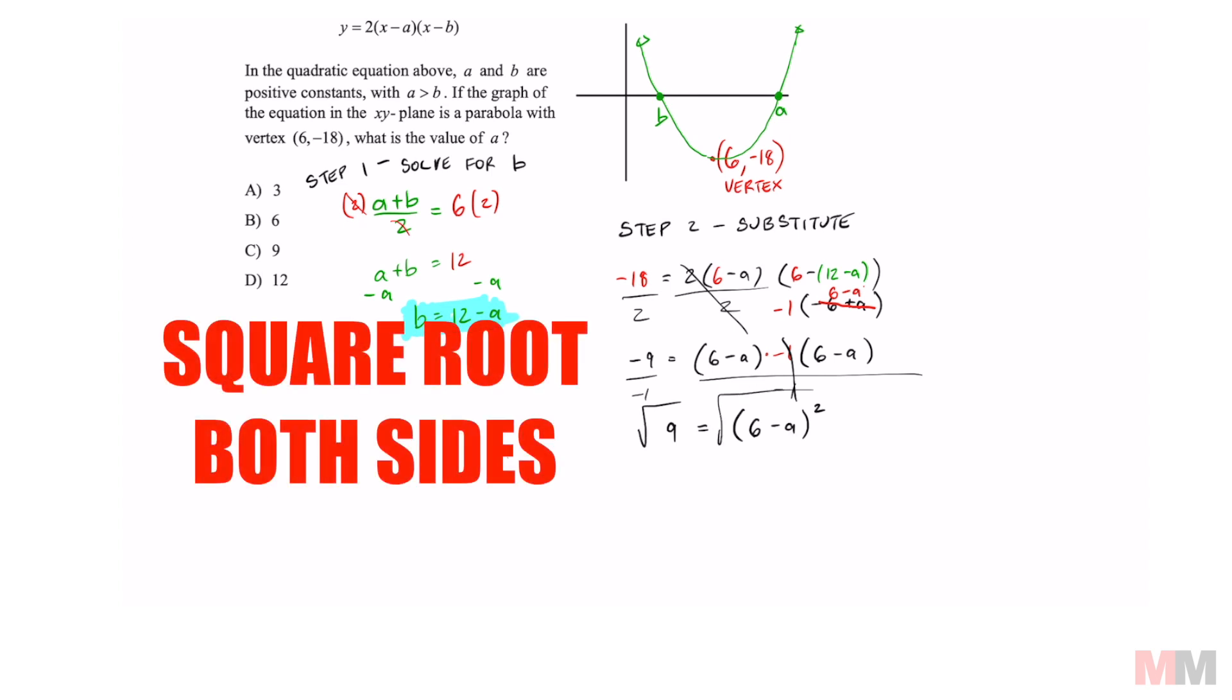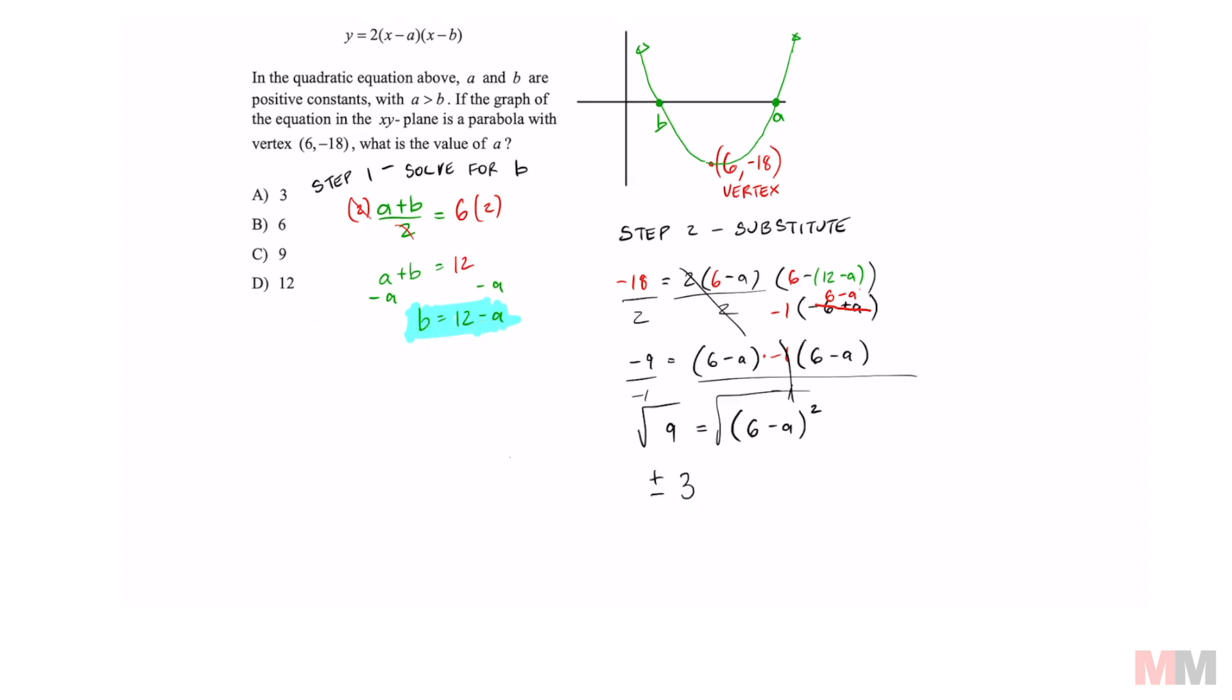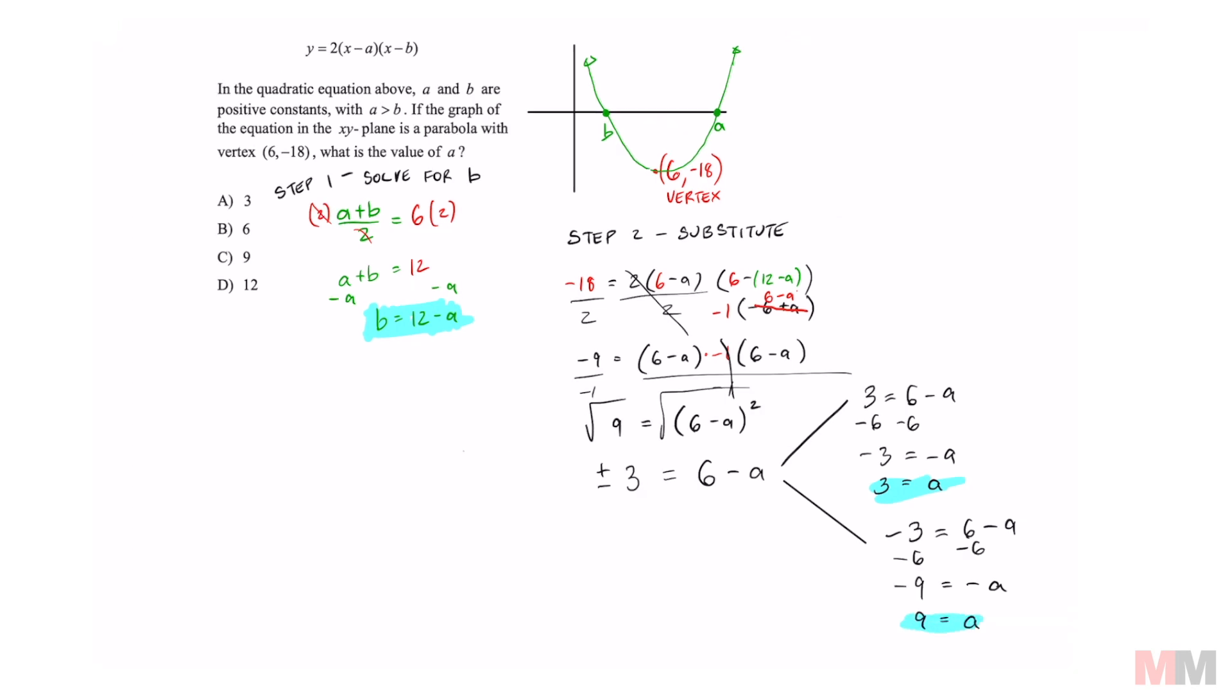Take the square root of both sides. ±3 = 6 - a, which is going to split up into two scenarios. 3 = 6 - a, which gets you a = 3. And the other scenario is going to be -3 = 6 - a, which gets me a = 9.